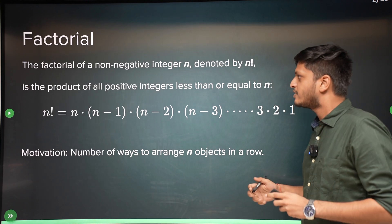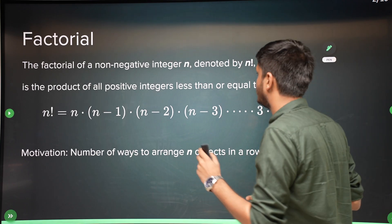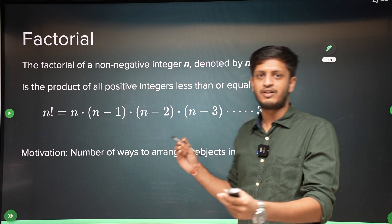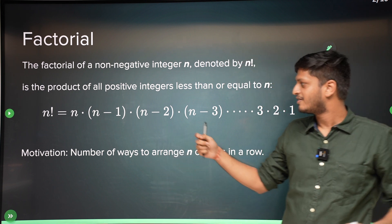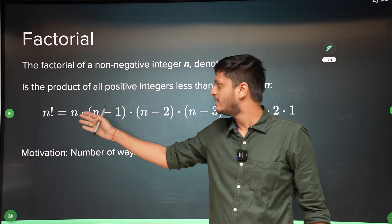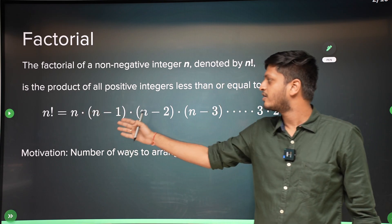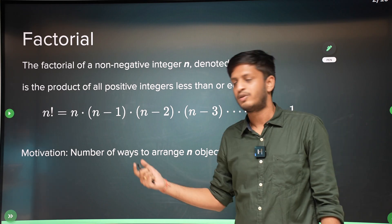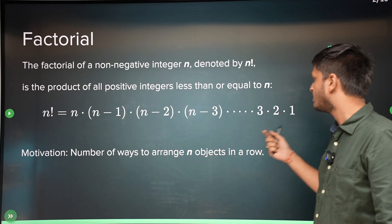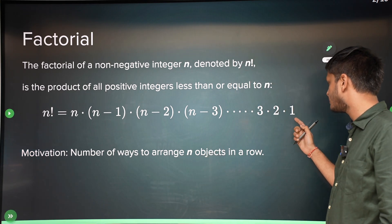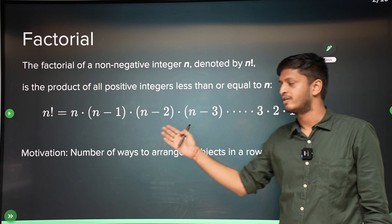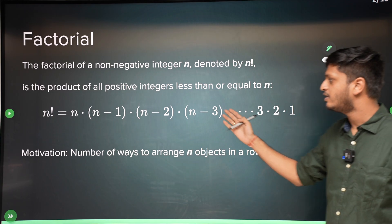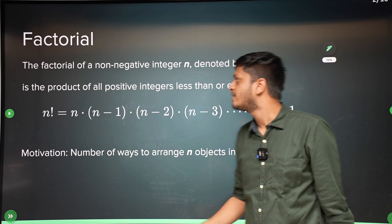So what is factorial? Factorial is defined as the product of all natural numbers up to n. So starting from 1: 1 × 2 × 3 × 4 up to n — this is what n factorial is.